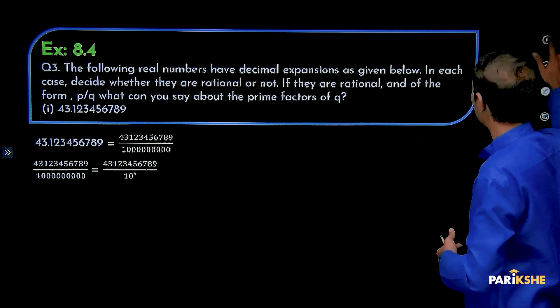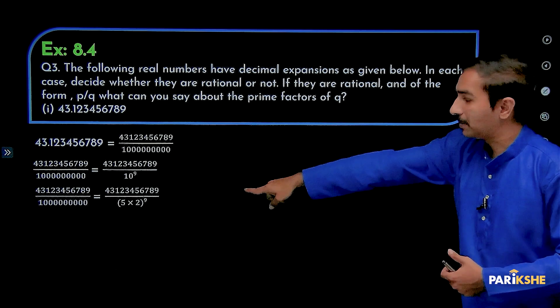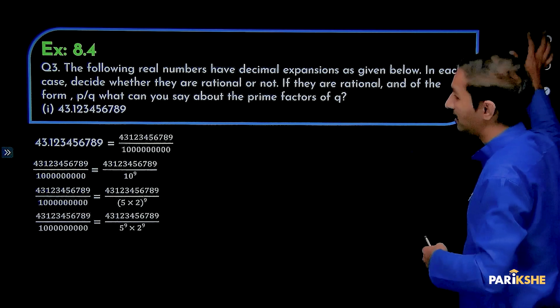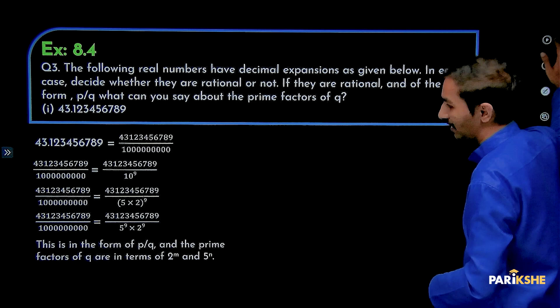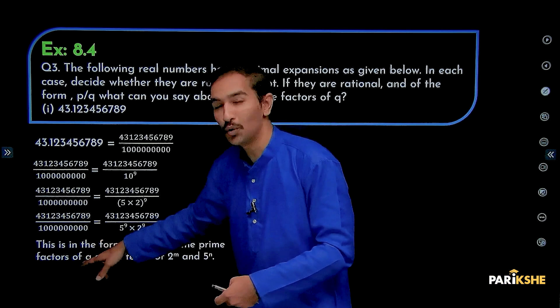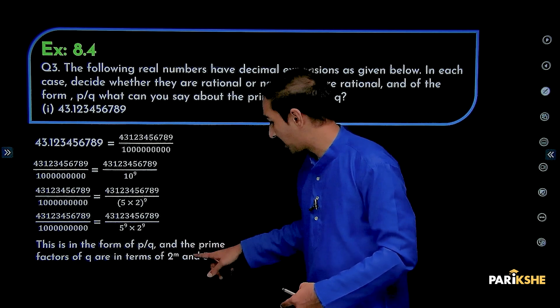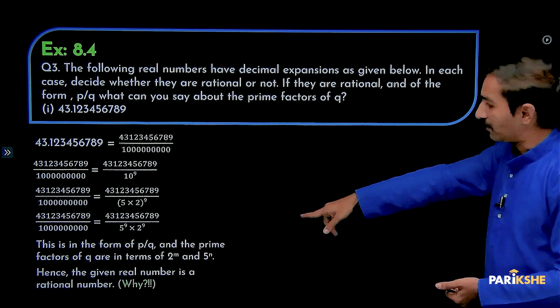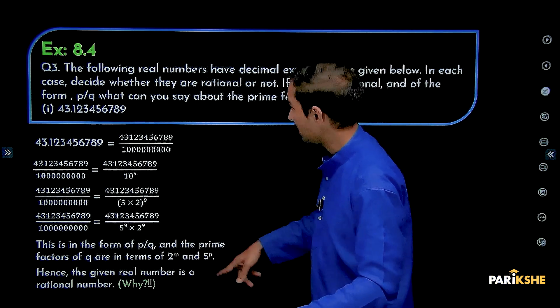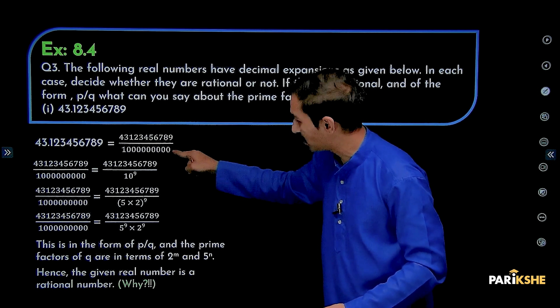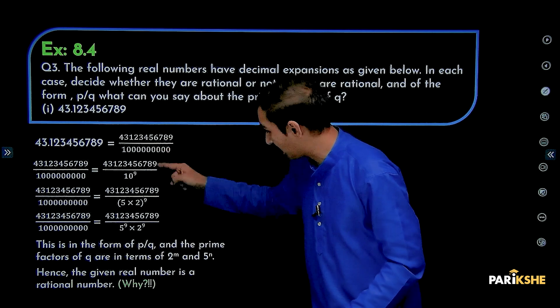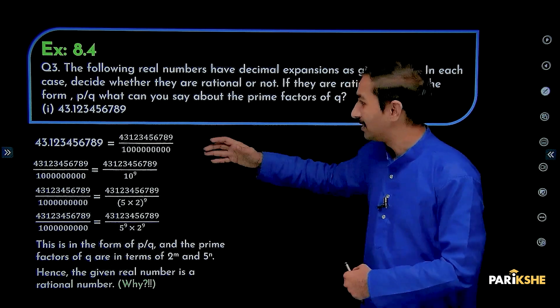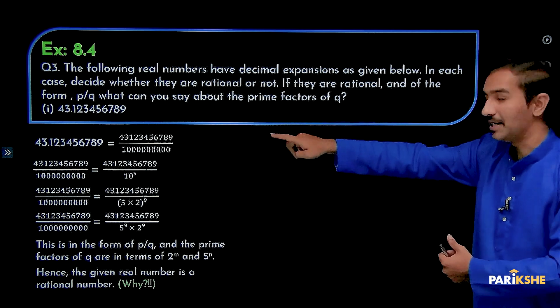A number expressed in the form of p by q, where q is not equal to 0, then that number is called as a rational number. That is a rational number. Prime factors of q na kandide baiko. Adhine 10 to the power of 9 antha barithi idhini. 10 to the power of 9 antha baribodh, 5 into 2 to the power of 9. This is in the form of 5 to the power of n into 2 to the power of n. Adhra idhre decimal terminate agathe antha adharhartha. This is in the form of p by q and the prime factors of q are in the terms of 2 to the power of m into 5 to the power of n, where m and n both are positive integers. Hence the given real number is a rational number. Because that number can be expressed in the form of p by q, where q is not equal to 0 and the prime factors of the denominator are 2 to the power of 9 and 5 to the power of 9 which is in the form of 5 to the power of m into 2 to the power of n. Therefore, the given number is a rational number and the decimal expansion is terminating.